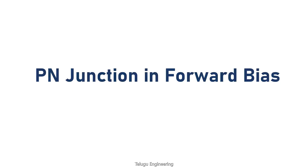Welcome back, hope you are doing well. In this video we will be looking at a PN junction diode in forward bias - how the VI characteristics vary. We will be looking at the graph. If you haven't watched my previous videos on intrinsic and extrinsic semiconductors as well as PN junction diode in no-bias condition, please watch those as they are very helpful.